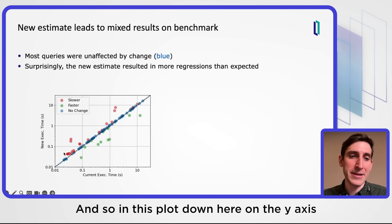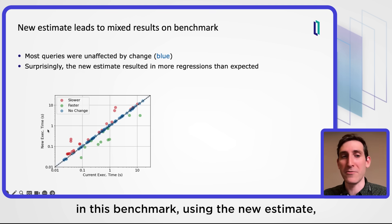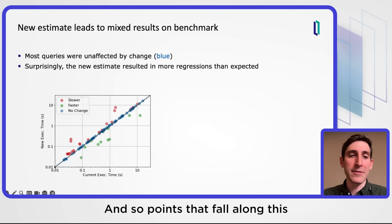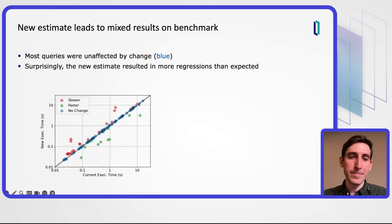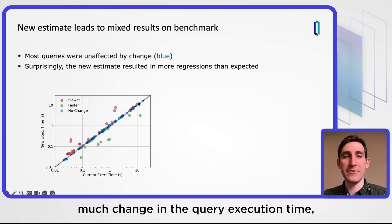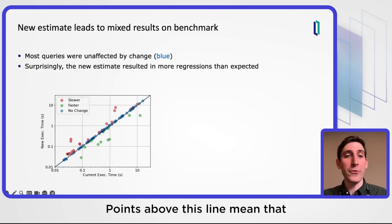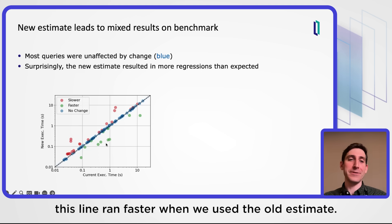In this plot, the y-axis is the execution time of the queries in this benchmark using the new estimate, and the x-axis is the execution time using the current estimate. Points that fall along the diagonal line don't have much change in query execution time whether using the new or old estimate. Points above this line mean queries ran slower using the new estimate, and points below this line ran faster when we used the old estimate.